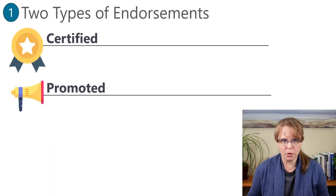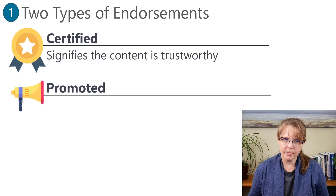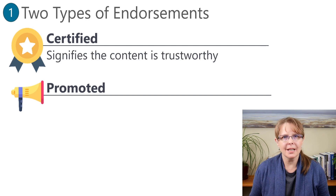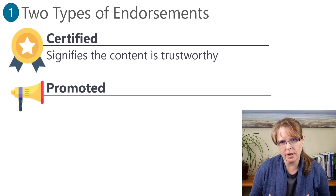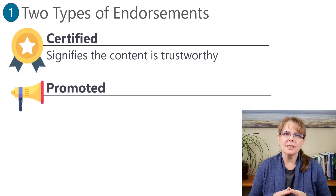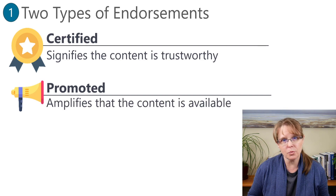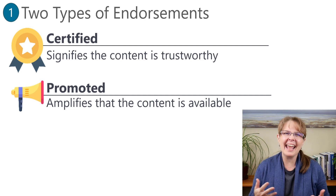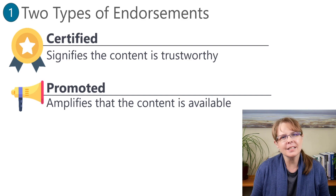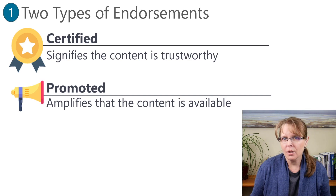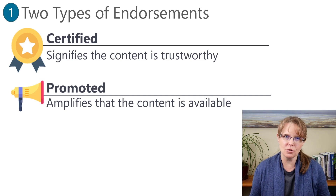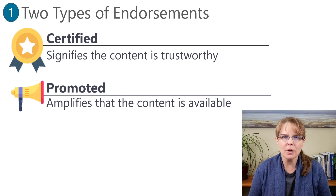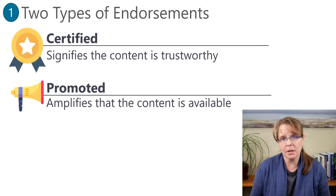Let's begin with the two types of endorsements: certified and promoted. The certified endorsement is used to signify that content is trustworthy. This implies there is a process and some amount of rigor involved to be certain it's trustworthy. Whereas the promoted endorsement is more of a way to amplify that content is available for use, and it doesn't mean that it's not trustworthy, but it usually means something less than certified because anyone with edit permissions on the object can set it to be promoted.